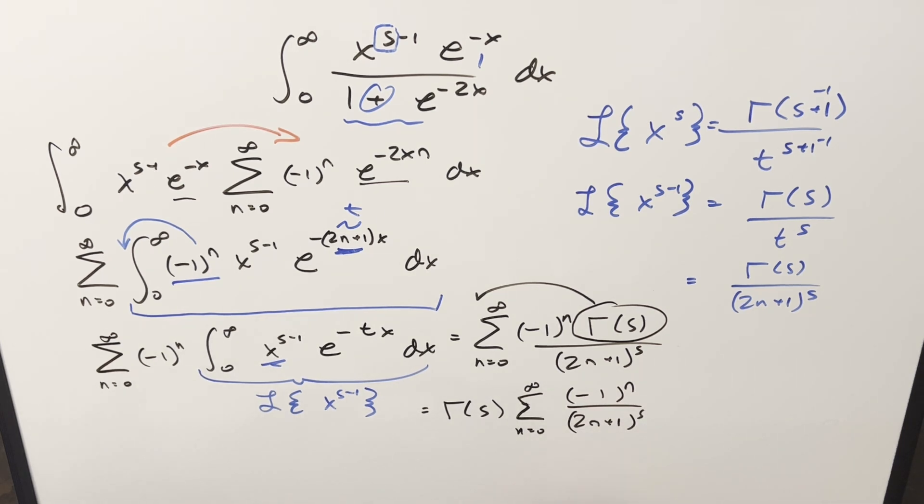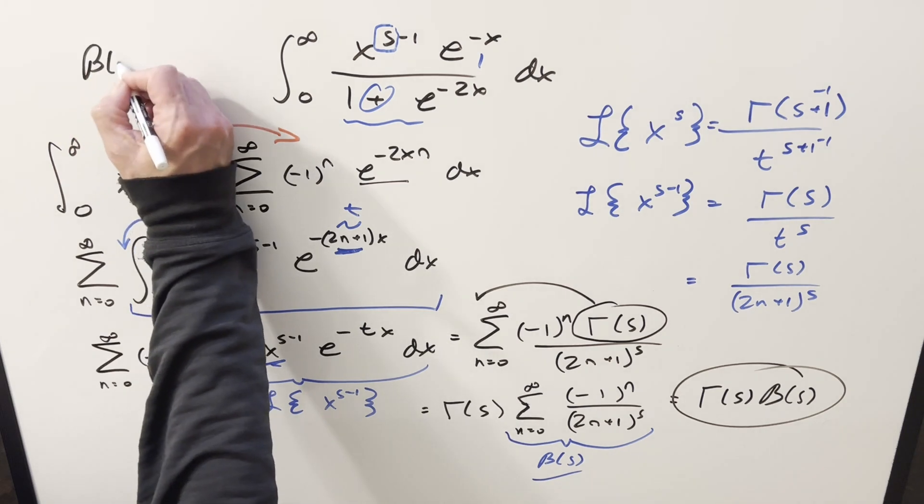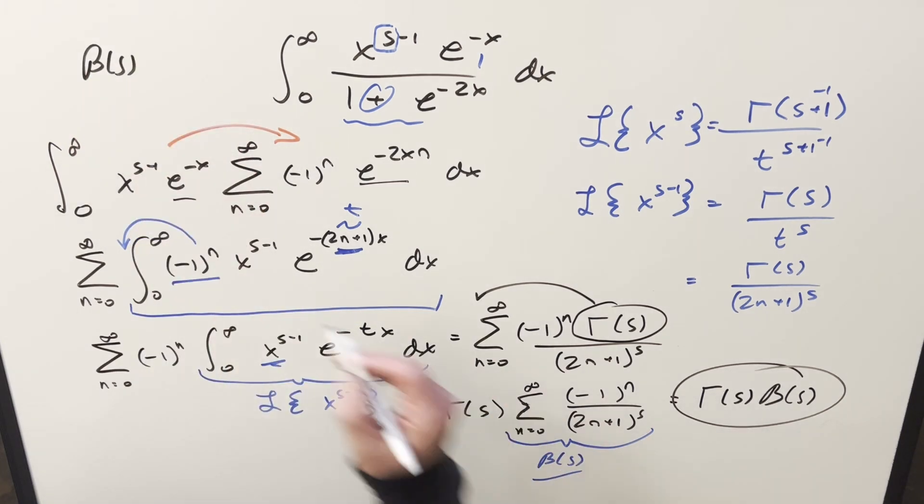And now at this point, I don't think I can simplify this any further. But this thing here is in exactly the form for the Dirichlet beta function at s. Not to be confused with the beta function we usually see in terms of an integral. So we can just put this together. And for the solution to this, we're just going to have gamma of s times Dirichlet beta of s, and that's it. And so one way you may see this in terms of a definition, just rearranging it.